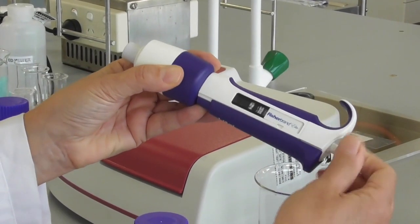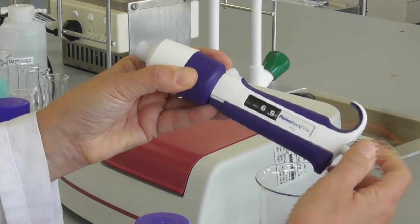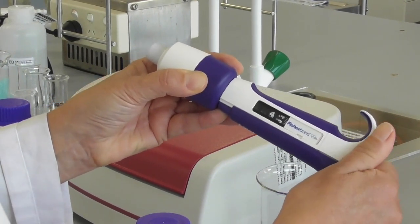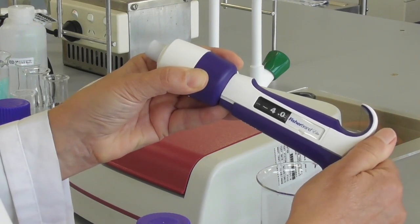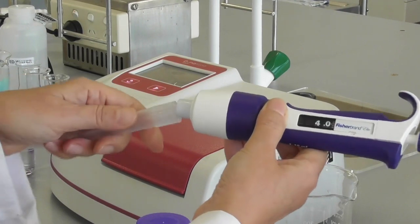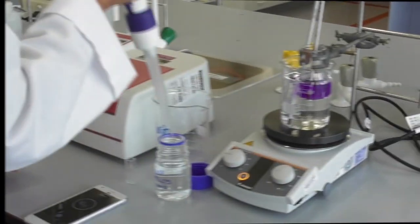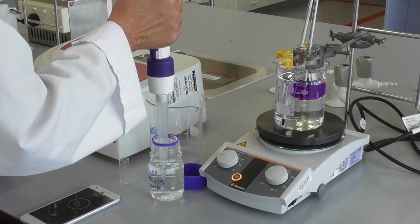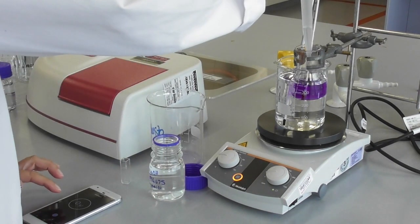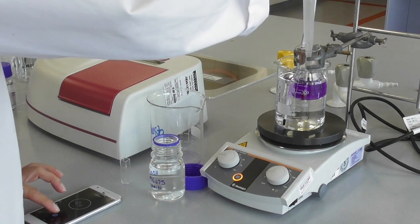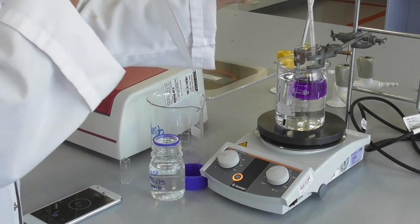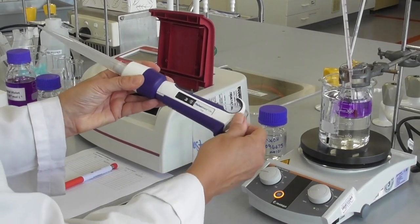Once the temperatures are the same, we can start with the addition of sodium hydroxide. We adjust the micropipette to 4 milliliters and add a fresh tip. We measure out 4 milliliters of sodium hydroxide and add this to our crystal violet. Halfway through we start the timer. We mix the solution well.